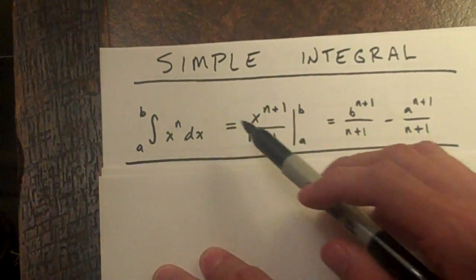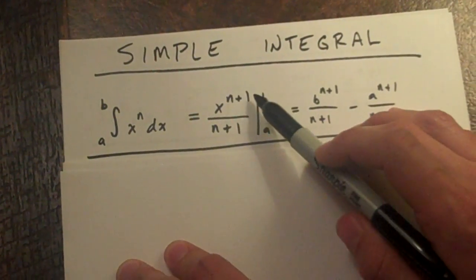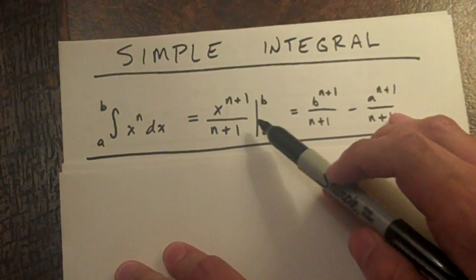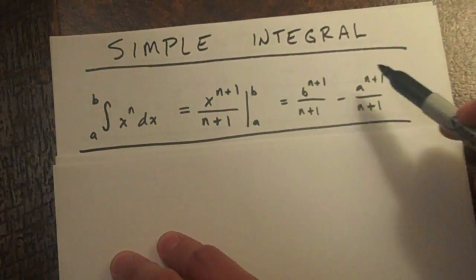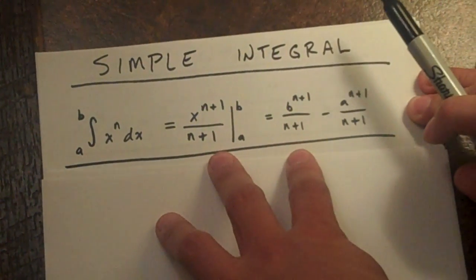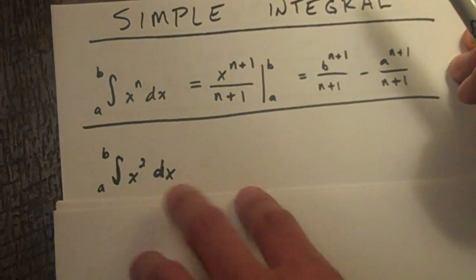Some x to the n and then what you do is you take x to the n plus 1 over n plus 1 from a to b. And then you take this whole mess right here, which we'll do some problems just to get a feel for how to work it.